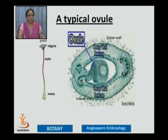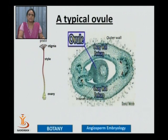The ovule is developing on the placenta and in different plants the number of ovules may vary. There may be only one ovule per ovary, or there may be a large number of ovules per ovary, and their arrangements are also different.